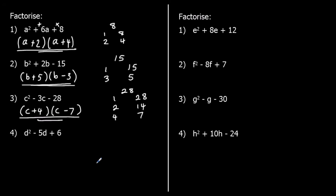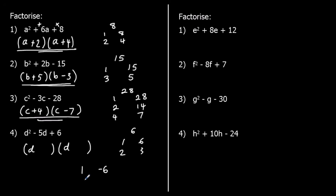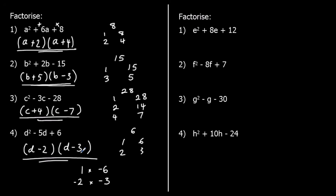Question 4: d squared minus 5d plus 6. What multiplies to make 6? Either 1 and 6, or 2 and 3. Which can give me a 5? Both can. I could have positive 1 and negative 6, or negative 2 and negative 3. Both add to make negative 5. But they also have to multiply to make positive 6. That's going to be the negative times the negative. So (d minus 2)(d minus 3) expands to give this.